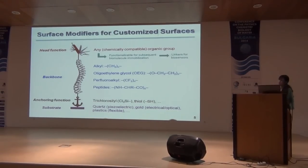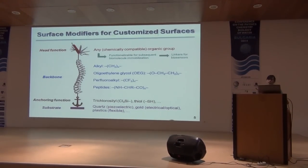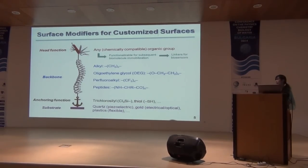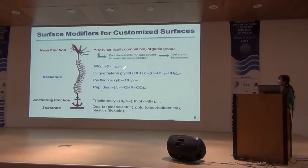Since surface modifiers are such an important part of the ad layer, let's take a closer look. You start with your substrate — quartz or gold, chosen based on the properties you want to exploit — and then you build your modifier, which consists of three parts. First, the anchoring function that binds to your substrate, such as trichlorosilyl for hydroxylated surfaces or thiols for gold. Second, the backbone, which can be a simple alkyl chain or oligoethylene glycol incorporating oxygen within the chain. Third, the head function, which can be any chemically compatible group, and for biosensor applications must be easily functionalizable so you can immobilize your probe.